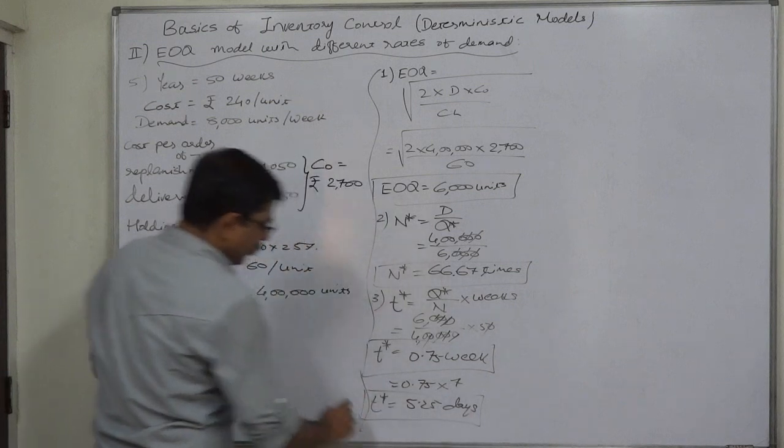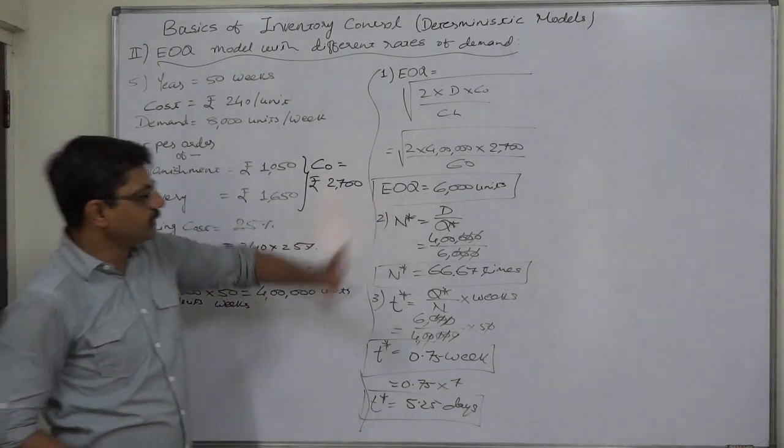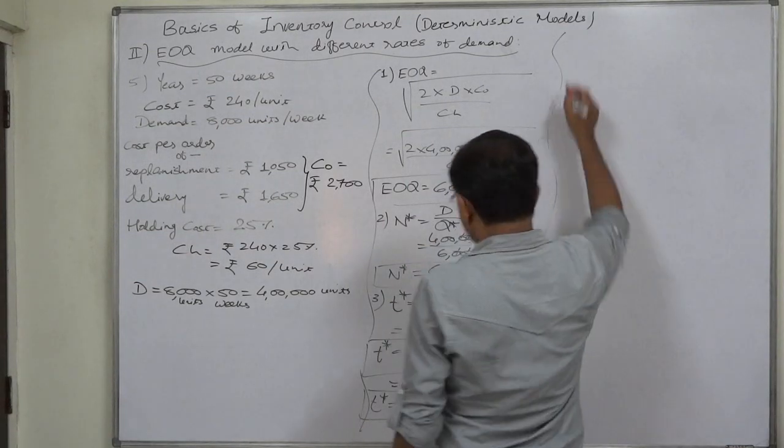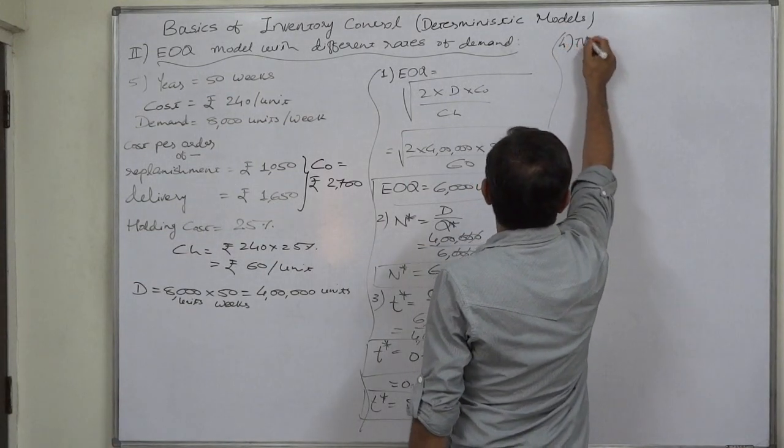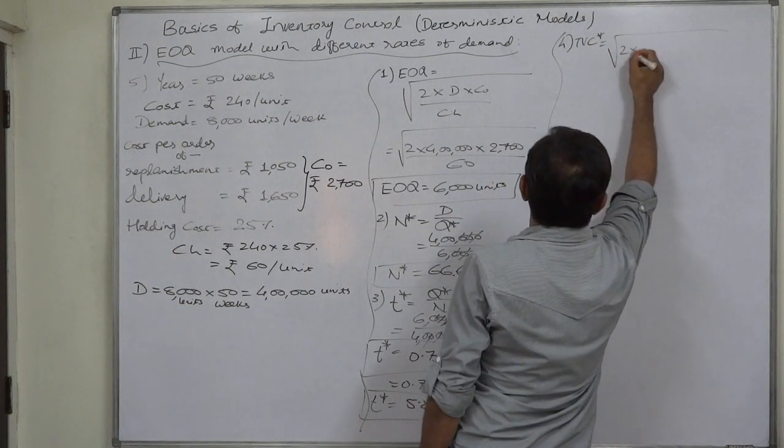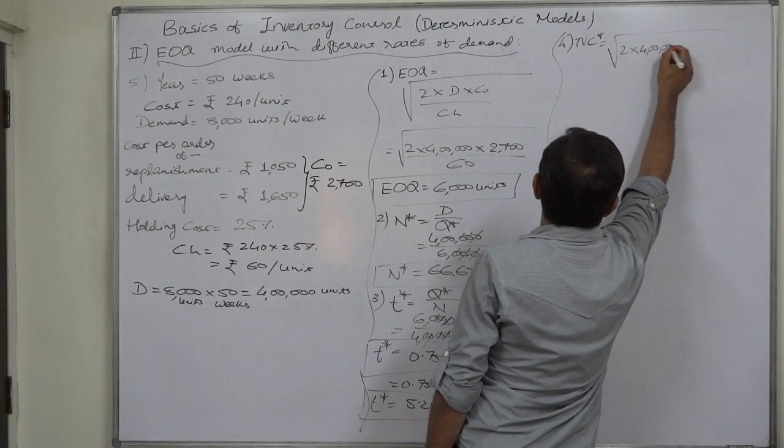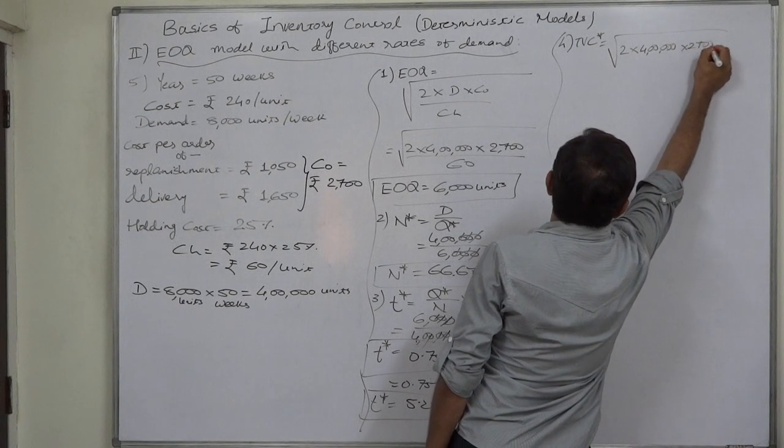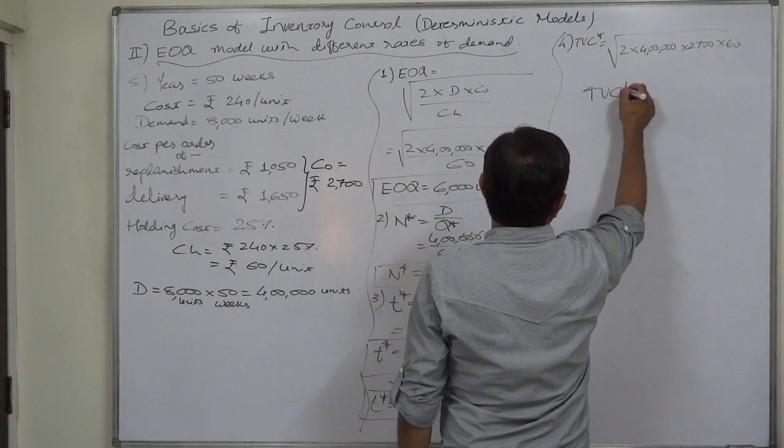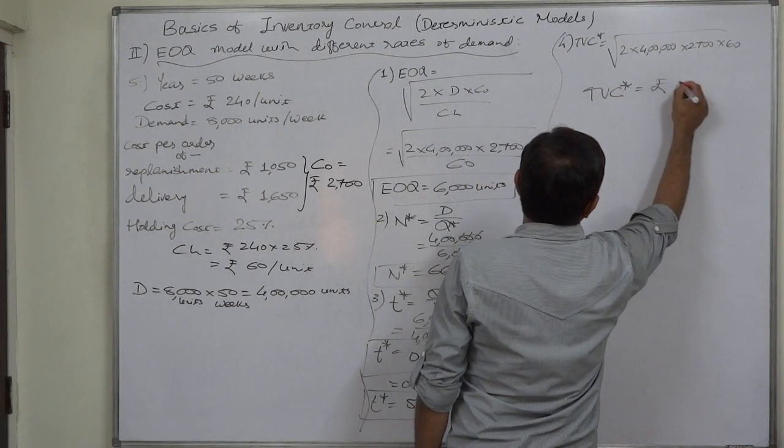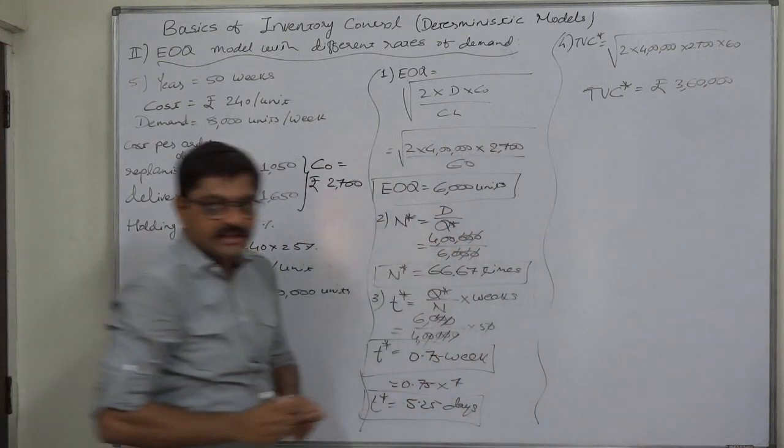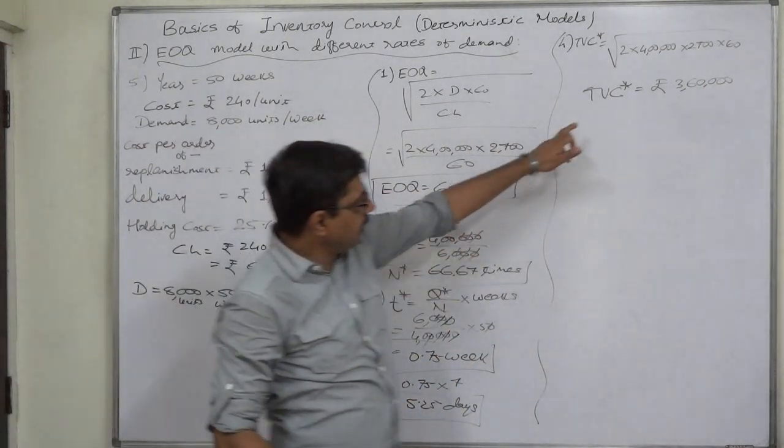Now total variable cost, the financial part of the decision: root 2 into 400,000 into 2,700 into 60. If we simplify this, the total variable cost comes to rupees 3 lakh 60,000.